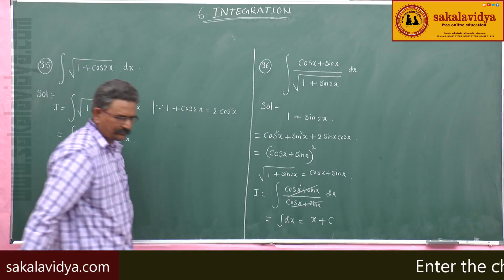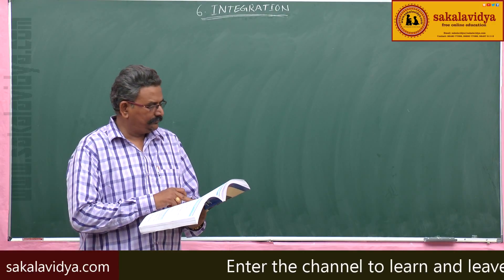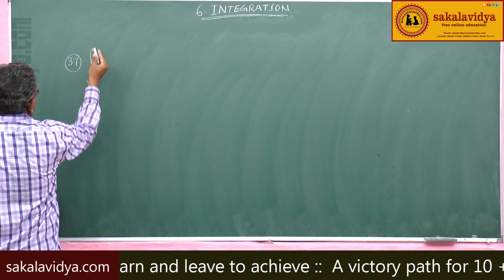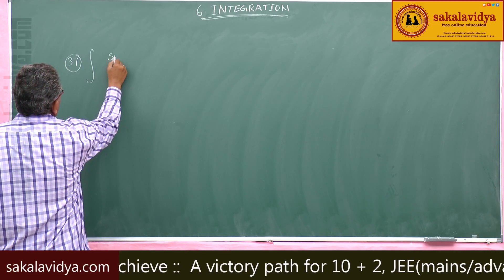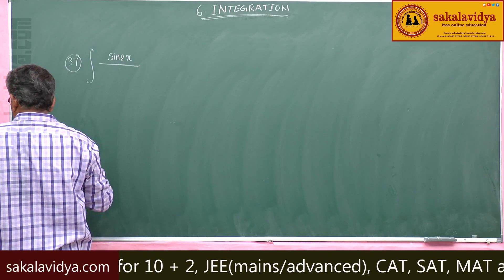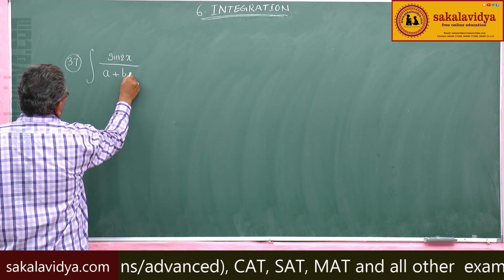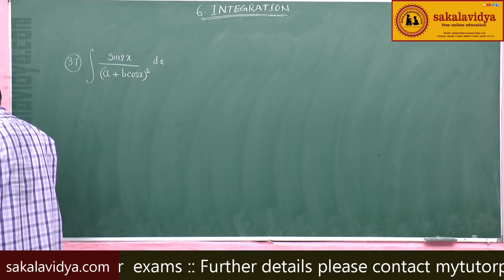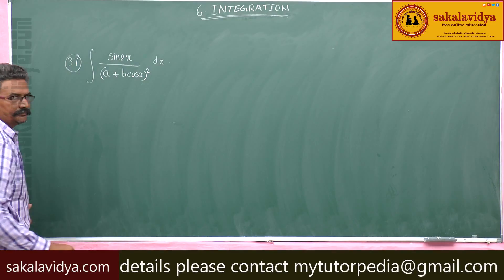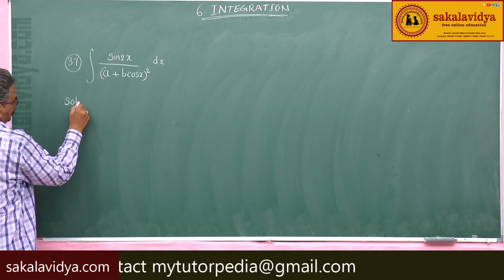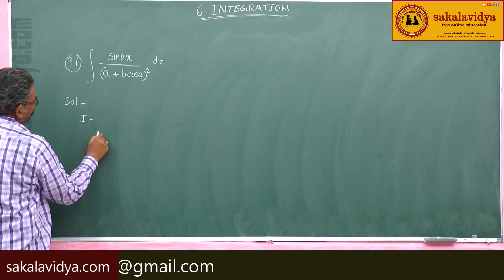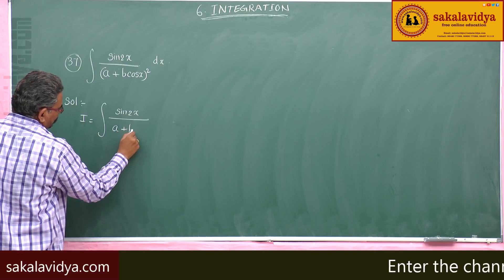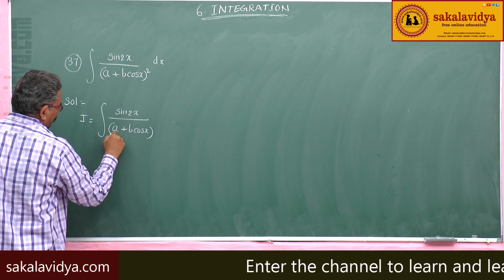Now let us evaluate the 37th problem: the integral of sin 2x divided by (a plus b cos x) whole squared, dx. Let i equal the integral of sin 2x by (a plus b cos x) whole squared dx.